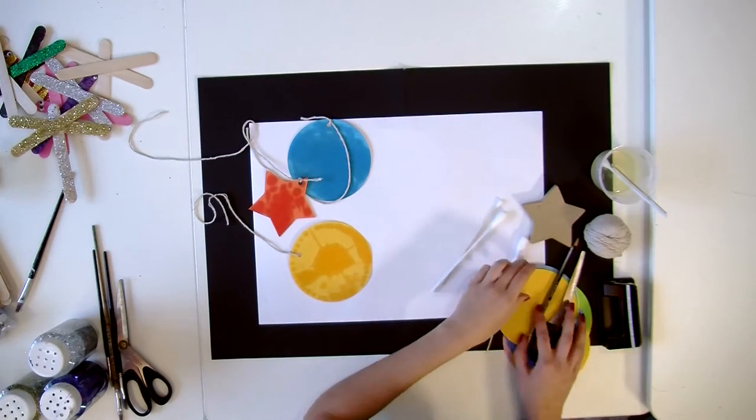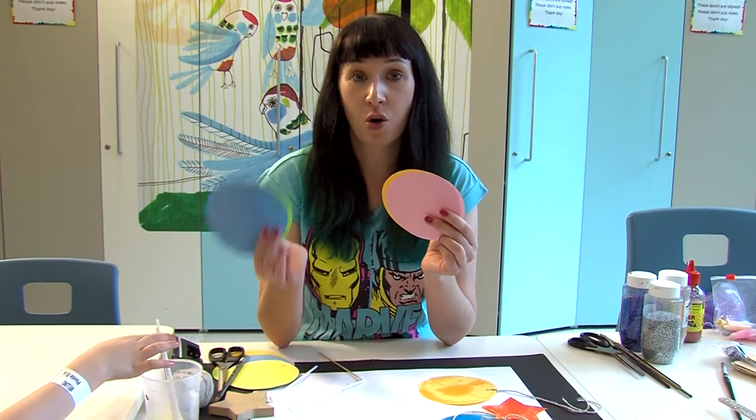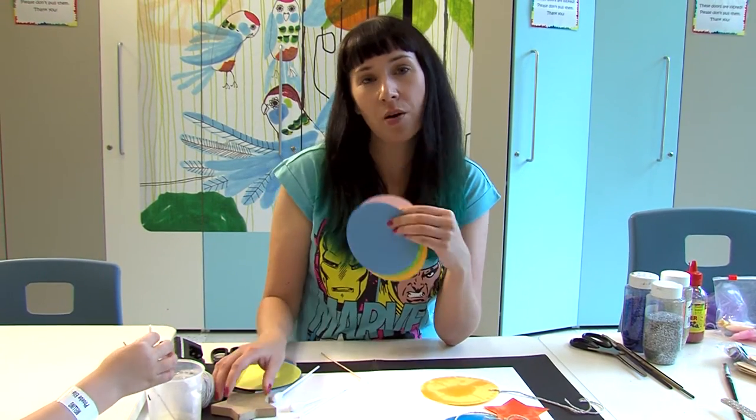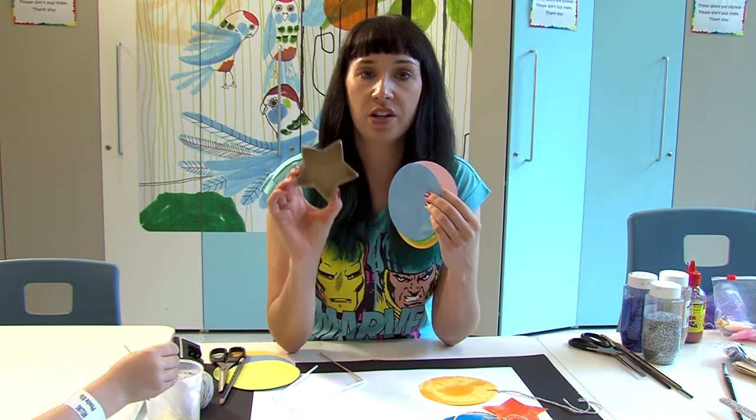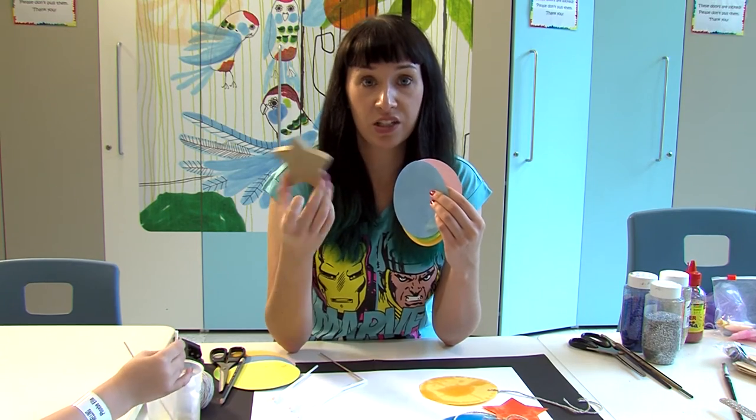You'll also need some colored paper. I've got some already cut out circles, but I want to make some stars as well, so I've got a stencil or in this case a box lid to do that.